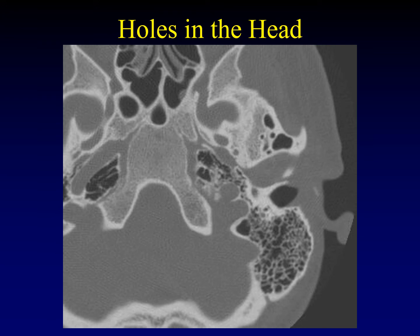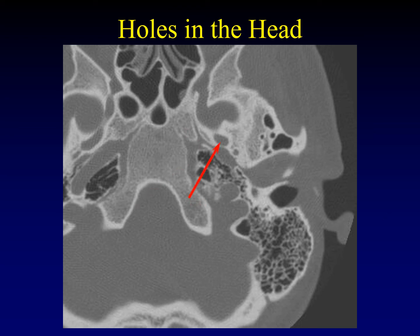Now let's review all the holes in the head visible on a single axial cut. We have the jugular bulb, and just anterior to that is the carotid foramen. Medially, just to the side of the clivus, is a triangular foramen with irregular boundaries — that's foramen lacerum. Next are foramen ovale and its partner foramen spinosum, just posterolateral to it. Foramen ovale conveys the third branch of the fifth cranial nerve; foramen spinosum conveys the middle meningeal artery. Together they've been likened to the imprint of a high-heeled shoe.